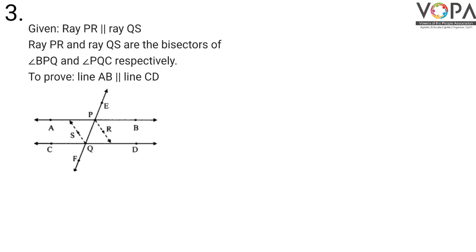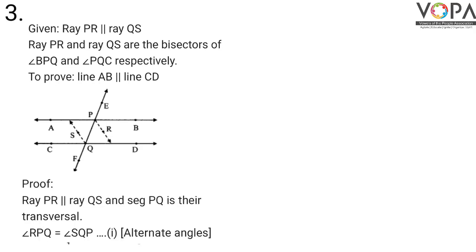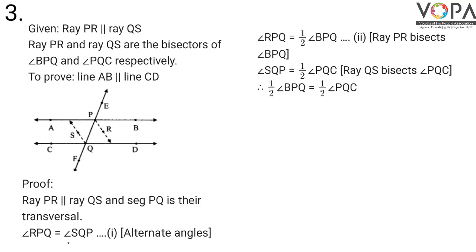In the proof, ray PR is parallel to ray QS and segment PQ is the transversal. Therefore angle RPQ is equal to angle SQP — these are alternate angles. Number this as statement 1. Also, angle RPQ is equal to half of angle BPQ, because ray PR bisects angle BPQ.